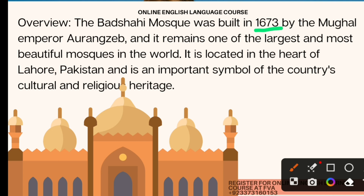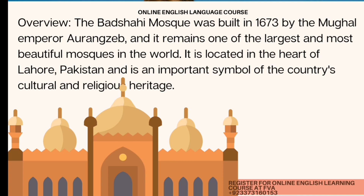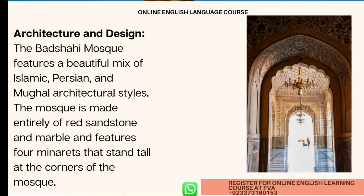The Badshahi Mosque is an important symbol of the country's cultural and religious heritage. Moving on to the architecture and design: the mosque features a beautiful mix of Islamic, Persian, and Mughal architectural styles. It is made entirely of red sandstone and marble, and features four minarets that stand tall at each corner of the mosque.